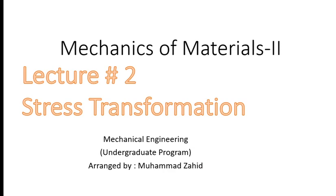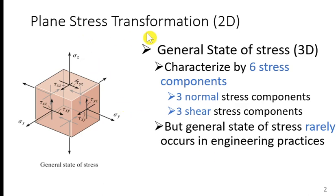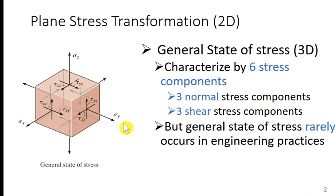We start with plane stress transformation in 2D, but before that let's discuss the 3D general state of stress. A cube is shown with x, y, and z axes. This cube has six faces, and each face has one normal stress and two shear stresses, giving 18 overall stresses. Due to symmetry and the assumption that tau_xy equals tau_yx, this reduces to only six stress components: three normal stresses — sigma_x, sigma_y, sigma_z — and three shear stresses — tau_xy, tau_yz, tau_zx.